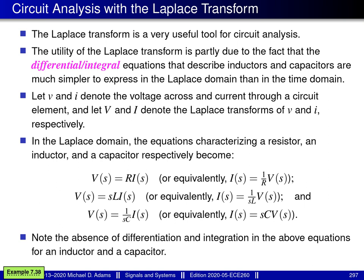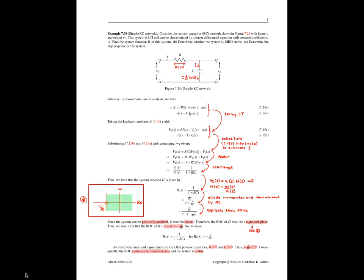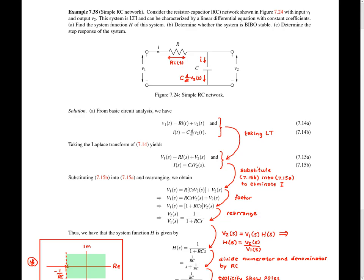At this point, I'd like to consider an example of using the Laplace transform to analyze a simple electronic circuit — in particular, example 7.38. In this example, we're given an electronic circuit that's LTI and consists of a single resistor and single capacitor connected in the manner shown in this figure here.